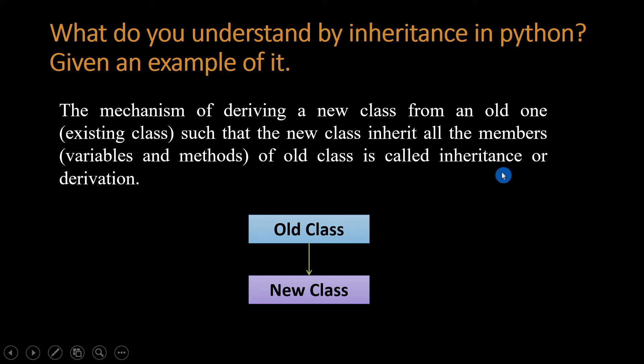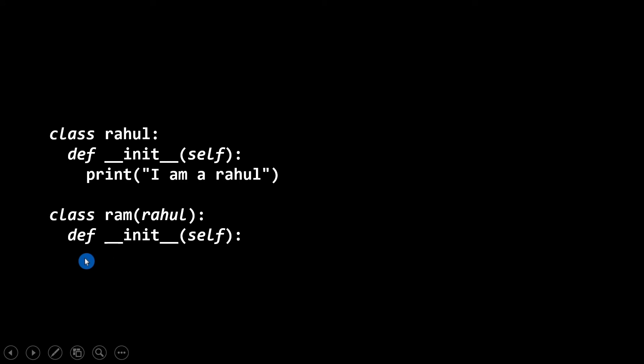You see one example here. I create one class 'rahul' and I create one constructor __init__(self) and I print 'I am a rahul'. Here I create one more class 'ram' and I inherit the rahul class. After that I create one constructor in the ram class.